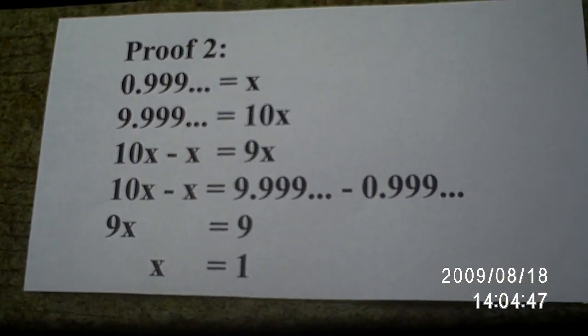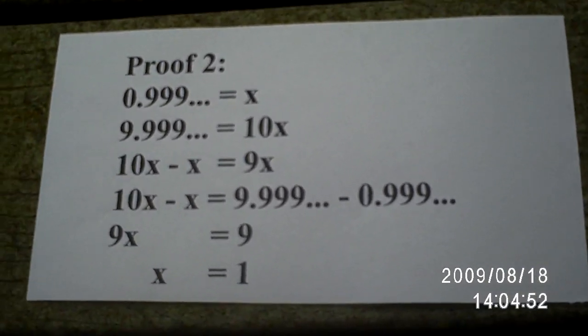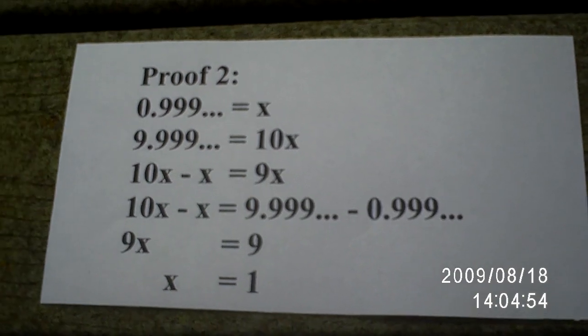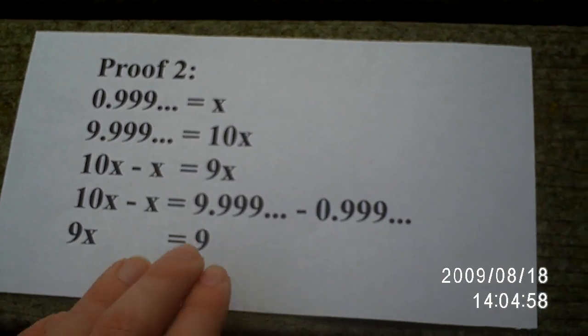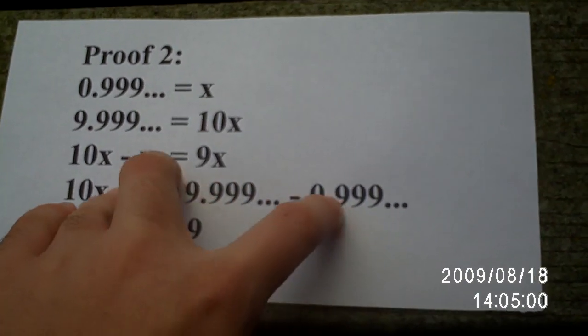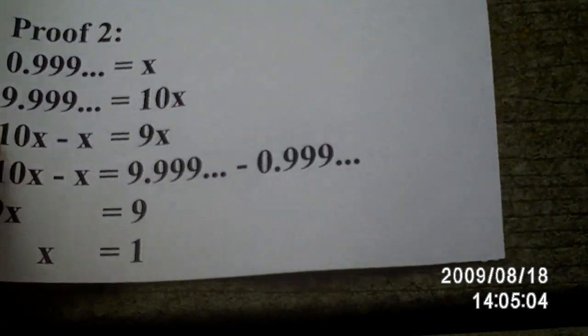But here's the flaw with this. Now, infinity minus infinity doesn't technically equal 0. And people assume the same thing goes for 0.9 repeating. It's not necessarily a number. And that means that this does not cancel out. So x does not equal 1. There's a way to refute that, but I still don't really like it that much.